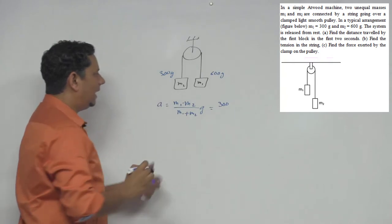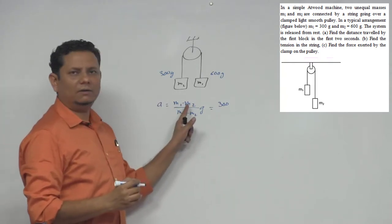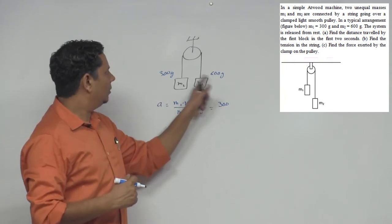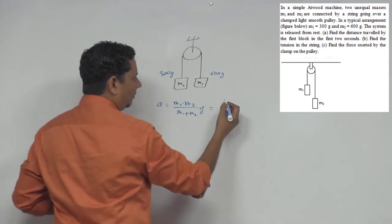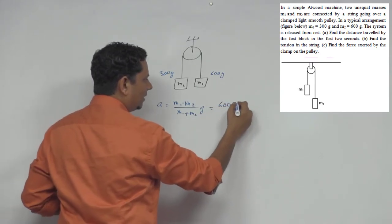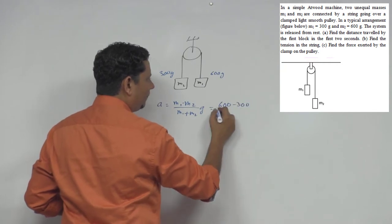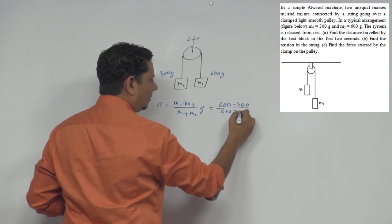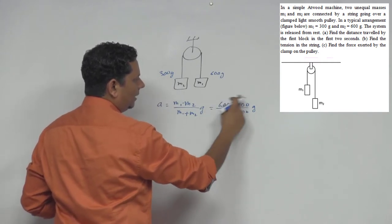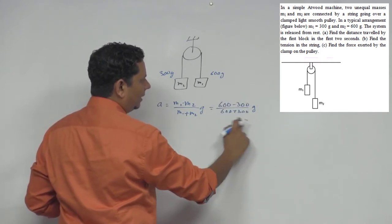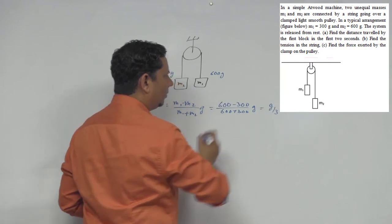Since both are in grams, the grams will cancel. So acceleration will be 600 minus 300 divided by 600 plus 300 multiplied by g. That's 300 divided by 900, so you get g by 3.